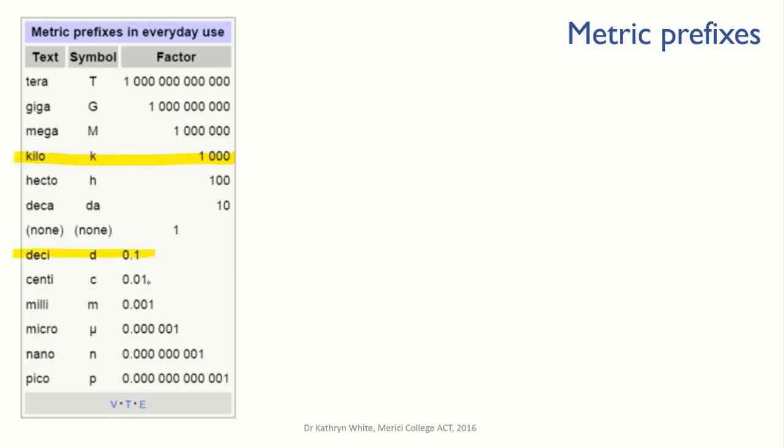The prefixes you most need to be familiar with are these: kilo, deci, centi, milli, micro, and nano. You can always look the conversions up, but if you know them off by heart, it speeds things up when you're plowing through a long calculation. So let's use meters as an example.